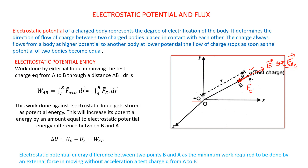This external force should be equal and opposite to the electric force F_electric, so that the net force on the charge becomes zero and no acceleration is produced. We have to apply a force equal and opposite to the electric force to bring the charge from A to B. For a small displacement dr, the small work done dW will be equal to F_external dot dr.